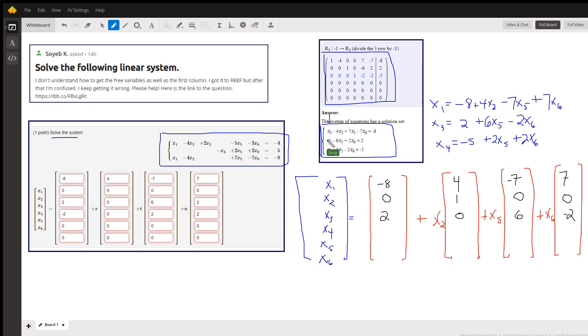So here's what that work looks like right here. Solving for x1, x3, and x4 in terms of the free variables. So how do we fill in these vectors or matrices? Well, let's look at x sub 1.